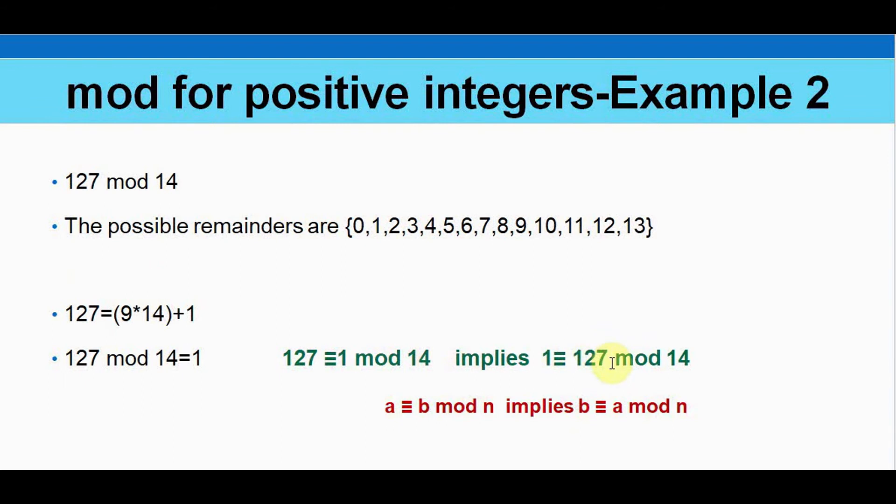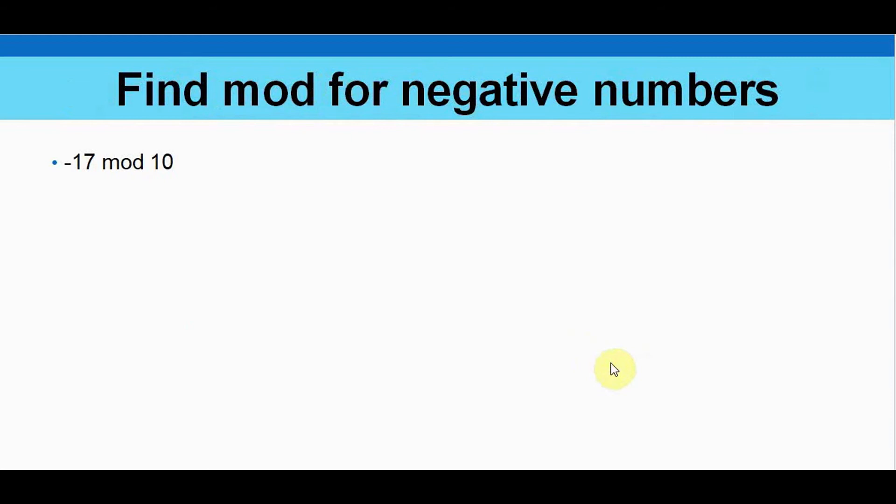So that's it. Now we can move on to finding out the mod for negative numbers, minus 17 mod 10. N is 10 in this case. For 10, the remainder should be any number from 0 to 9. So again we are taking this formula to represent a, a is equal to q star n plus r. Now substitute the values minus 17 equal to q star 10 plus r.